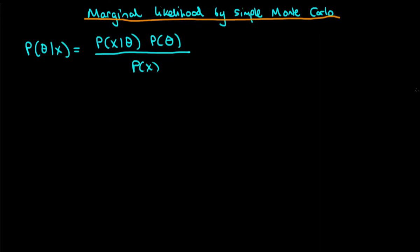In this video, I want to talk about how one way of estimating the marginal likelihood by a sort of sampling method, which some people call simple Monte Carlo, actually fails in practice, and why we need to think of other ways to estimate the marginal likelihood should we actually want to obtain this quantity.